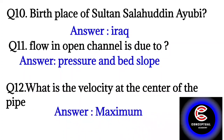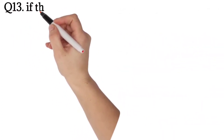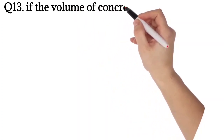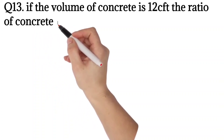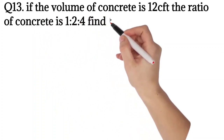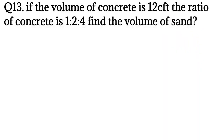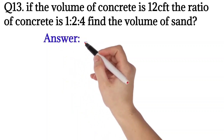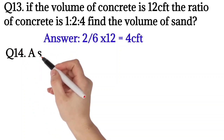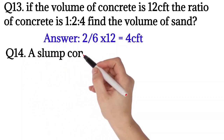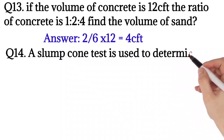Question number thirteen: if the volume of concrete is 12 cubic feet and the ratio of concrete is 1:4, find the volume of sand or fine aggregate. First, add all the ratios and divide by the total. The sand proportion is 4 divided by 6, multiplied by 12, which comes out to 4 cubic feet.